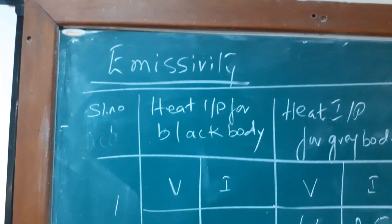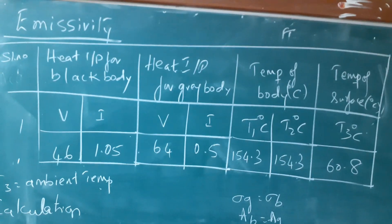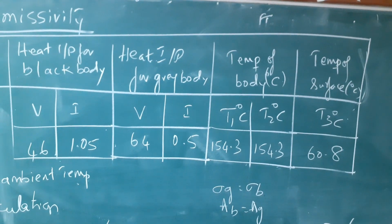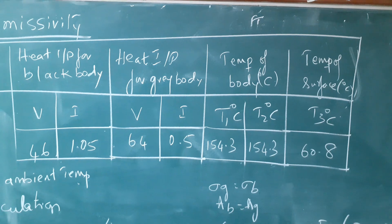Okay, this is the calculation of the emissivity experiment. See here. Now, heat input for black body, heat input for gray body, temperature of the body, and temperature of the surface. These are the four things I have taken in the tabular column.